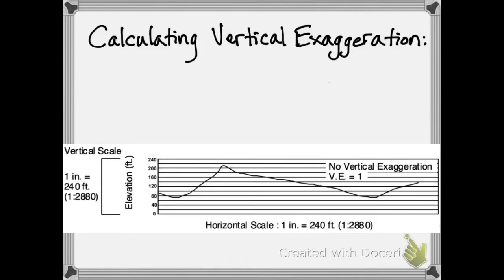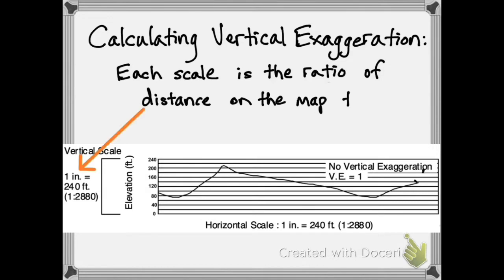The horizontal scale is the map scale, the scale of the map from which you took the topographic profile. Each of these two scales is the ratio of the distance on the map to the distance in reality.